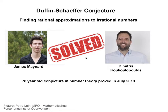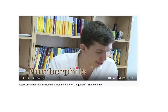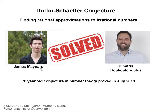I thought I might make a quick video on the Duffin-Schafer conjecture — finding rational approximations to irrational numbers. This was inspired by the Numberphile video that's just been posted on this, where you will actually hear James Maynard, one of the two people who proved this conjecture along with Dimitris. They proved this conjecture in 2019; it had stood for 78 years. It's a problem in number theory about how we can approximate irrational numbers using rational fractions.